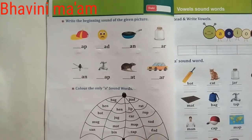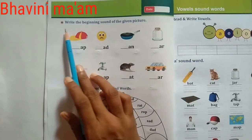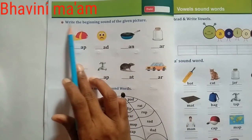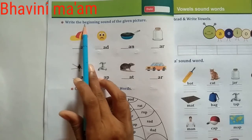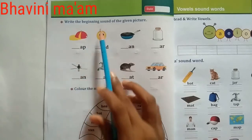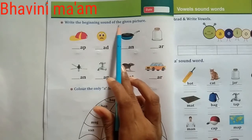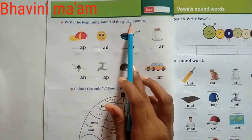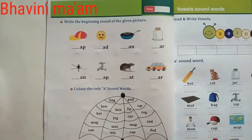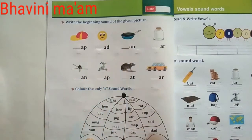So, kids, first work: we have to mention the date, and then the heading. Read the instruction with me: W-R-I-T-E, write. T-H-E, the. B-E-G-I-N-N-I-N-G, beginning. S-O-U-N-D, sound. O-F, of. T-H-E, the. G-I-V-E-N, given. P-I-C-T-U-R-E, picture. It means: write the beginning sound of the given picture.